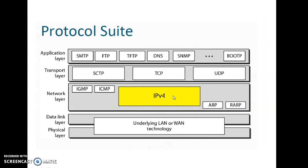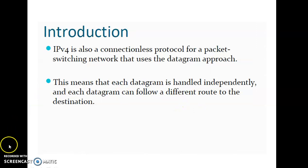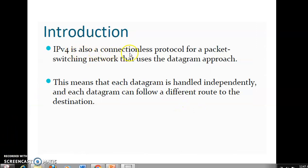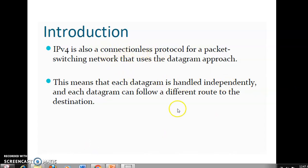IPv4 protocol lies under the network layer of the OSI reference model. IPv4 is also a connectionless protocol for packet switching networks that uses the datagram approach. This means that each datagram or packet is handled independently and each datagram can follow a different route to reach the destination. Routing independently is possible because it supports a connectionless protocol.